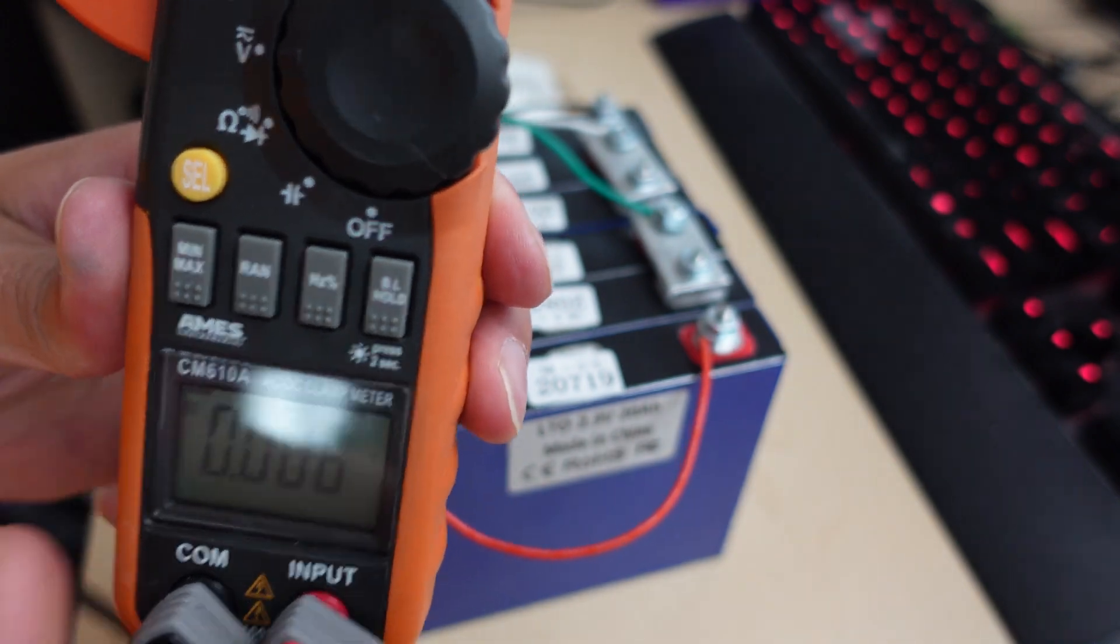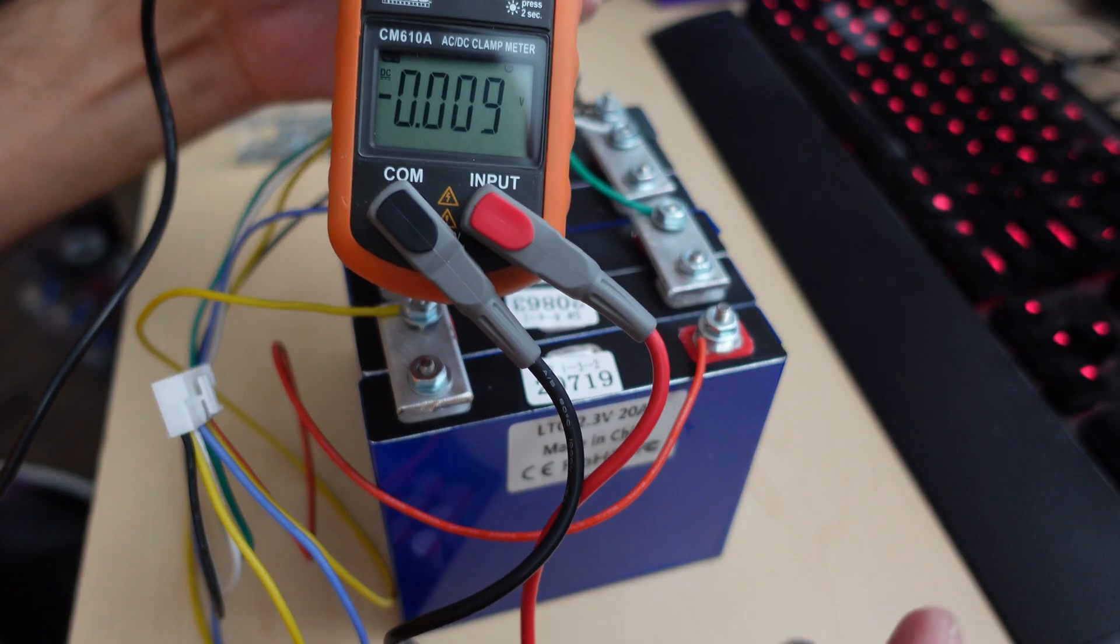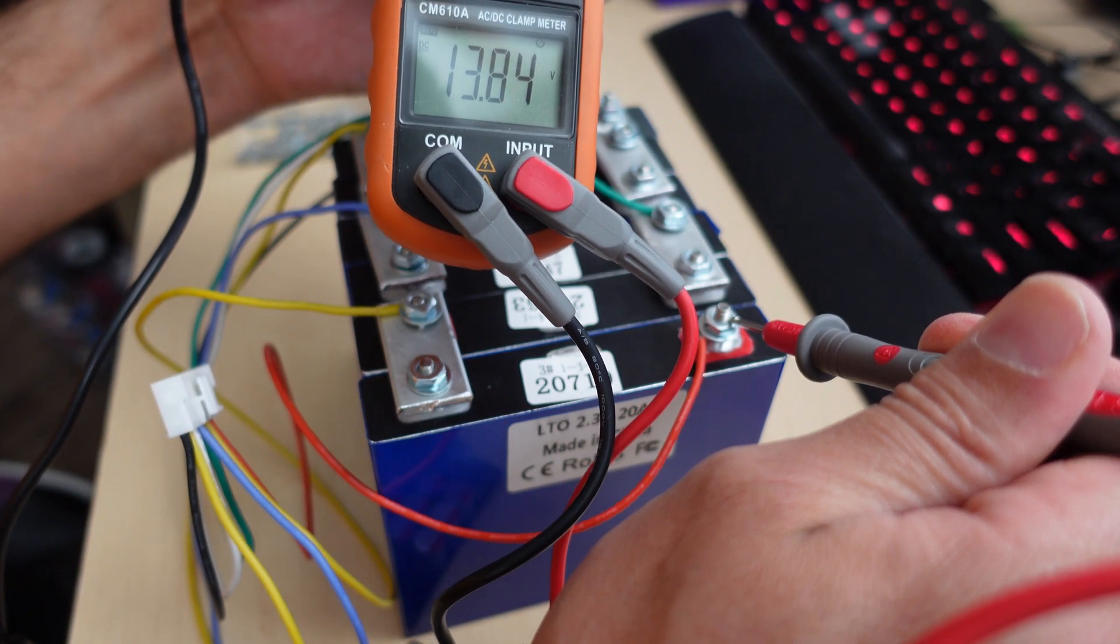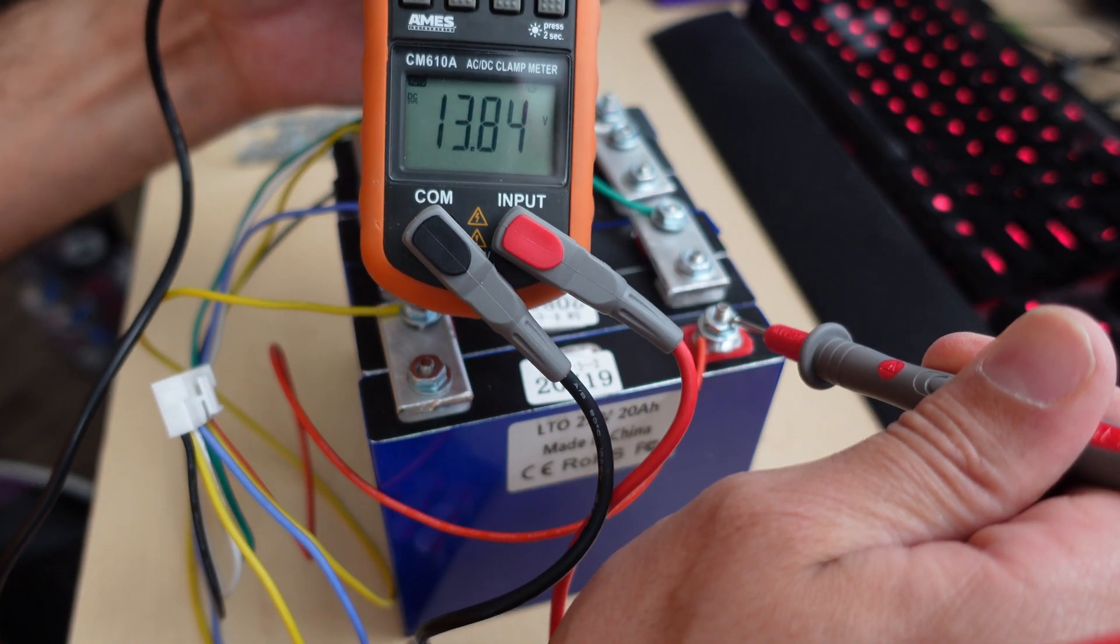Once the pack is totally put together the total voltage is 13.84 so that battery pack is not yet charged so we will have to charge these things up. The top voltage of these cells is 2.8 volts per cell and the lower limit is 1.5. To be safe I'm not going to take them any lower than 1.7 when I do test this thing out.